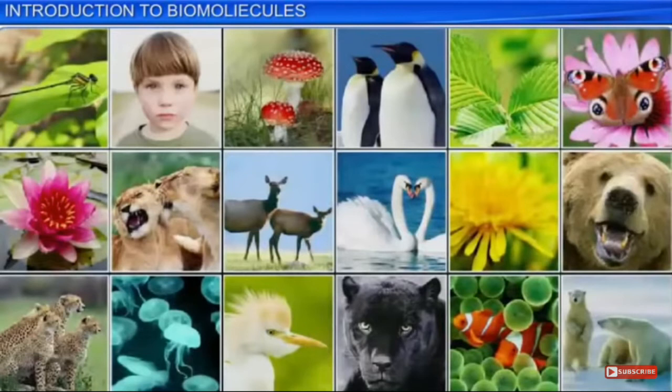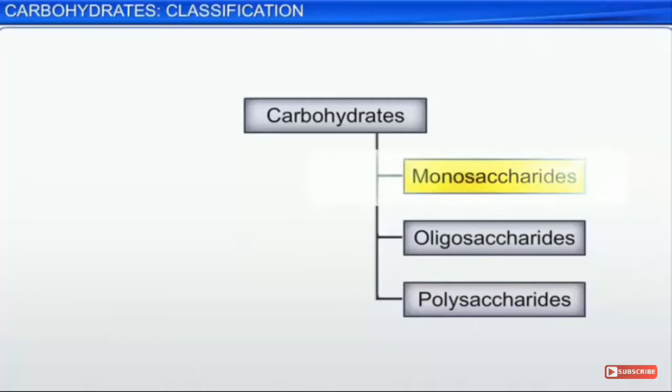Today we are going to continue with the topic of the chapter biomolecules. We talked about the introduction of carbohydrates; now we are going to talk about the classification of carbohydrates. Carbohydrates can be mainly monosaccharides, oligosaccharides, and polysaccharides.